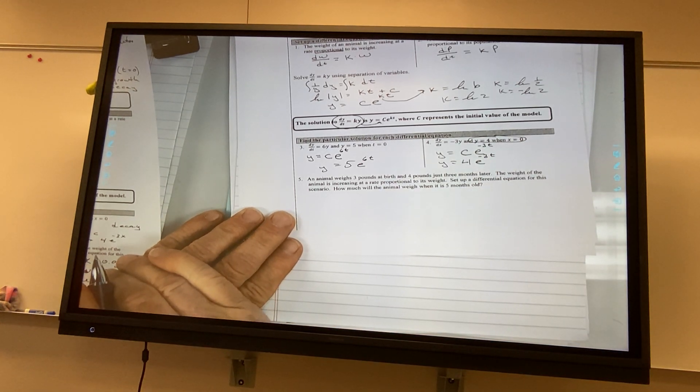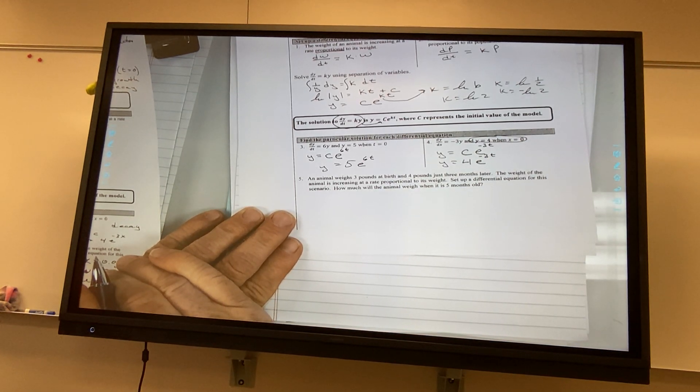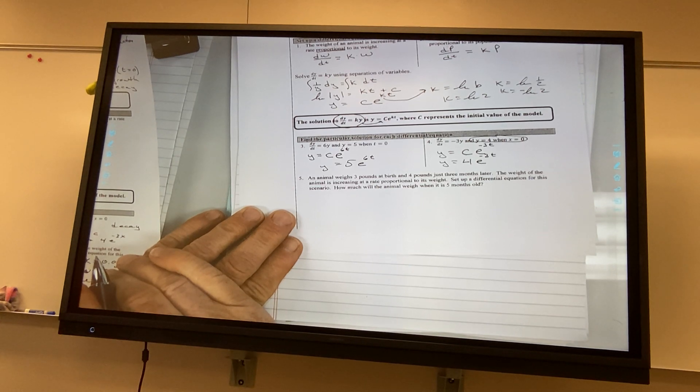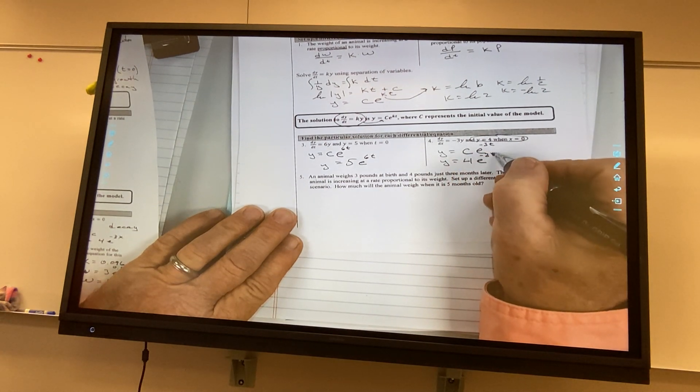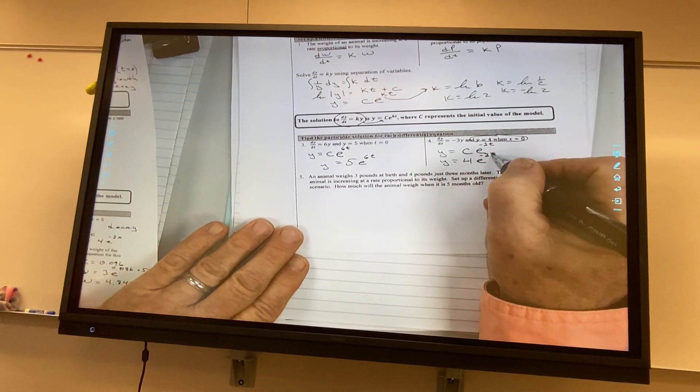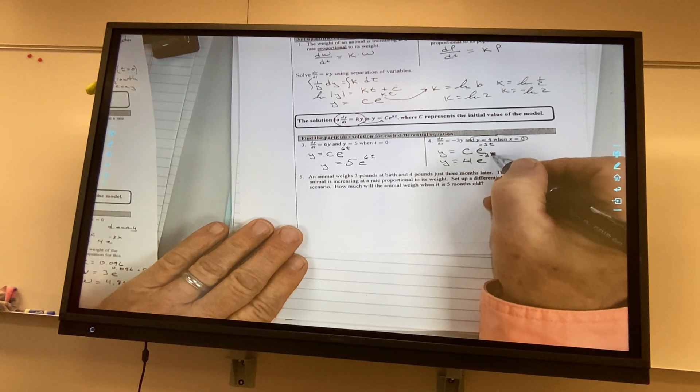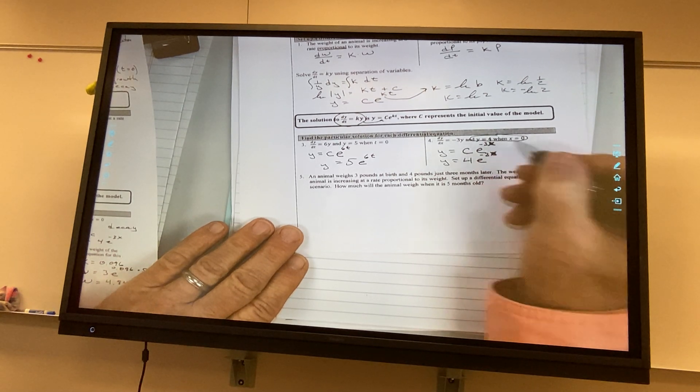Why don't we use x for this one? Hmm? It says dy over dx, not dy over dt. Oh, it should be x here. I didn't see the x. So, it should be x. I'm so used to time.